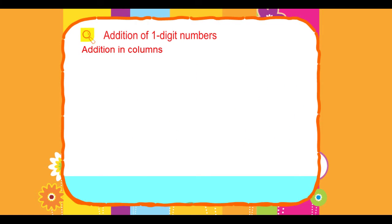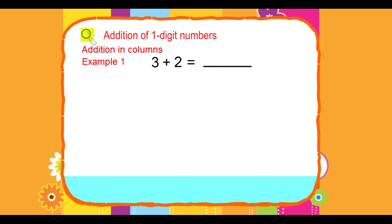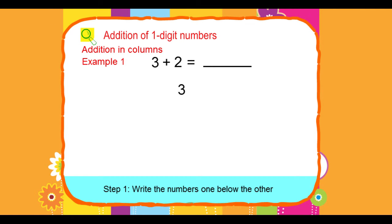Addition in columns. Example 1: 3 plus 2 equals blank. Step 1: Write the numbers one below the other — 3, then 2.